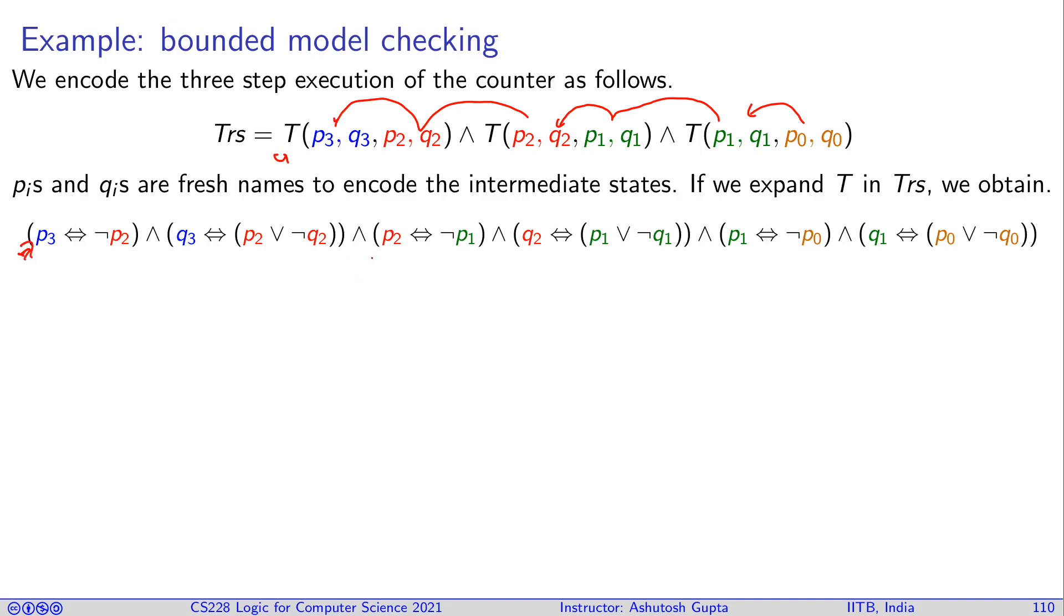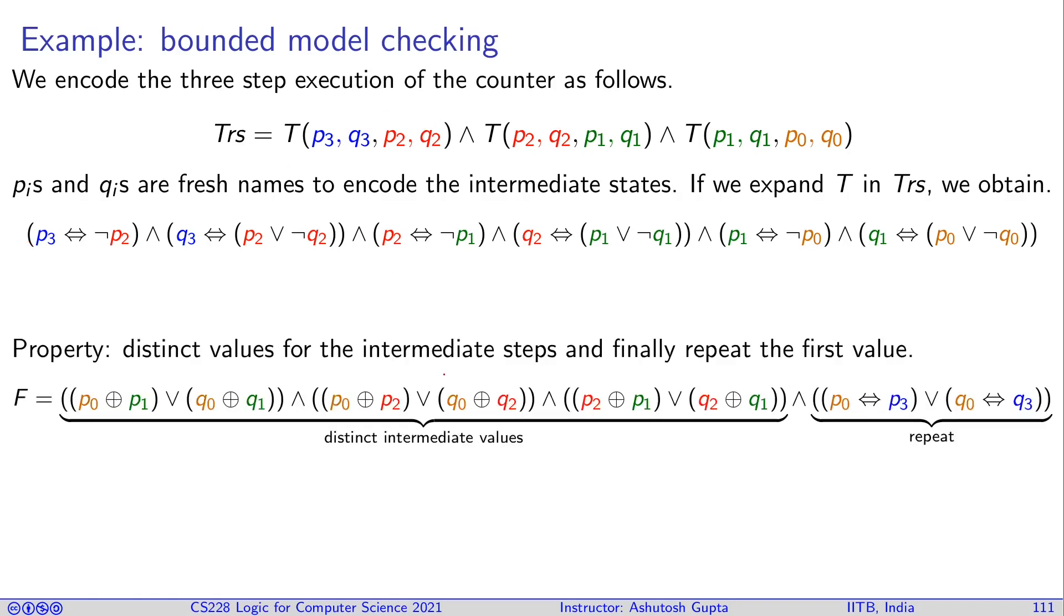So this formula, any satisfying assignment here is a run of your system. Now what do we do? We write down the property. The property is saying that every three steps later you get a repeat, right?